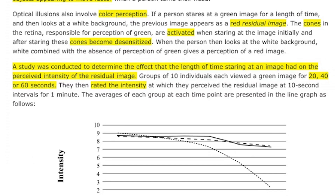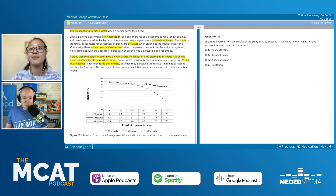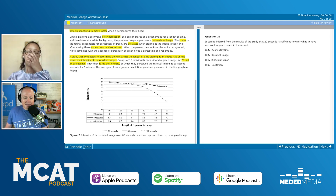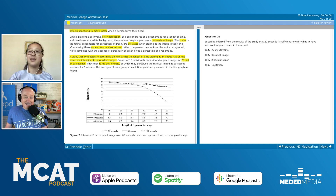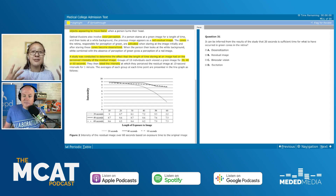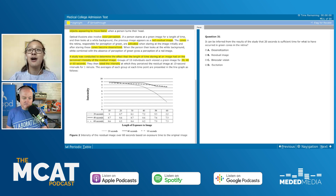Ryan, what are you noticing about the shapes of those lines? The first 20 to 30 seconds, they're all very similar and close together. Then the 20-second exposure group drops off pretty quickly after 30 seconds. The 40 and 60 second groups are basically the same — they end the same. I'd venture to say we've reached some sort of maximum desensitization at 40 seconds, and 60 seconds doesn't really add much. Exactly — the 40 and 60 second lines are basically on top of each other the whole time, suggesting a threshold for desensitization of those cones.